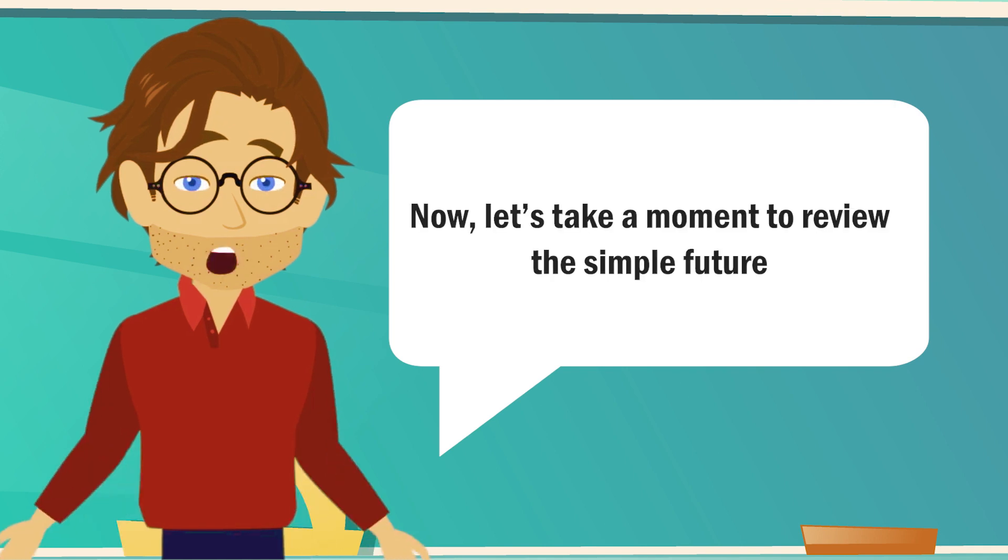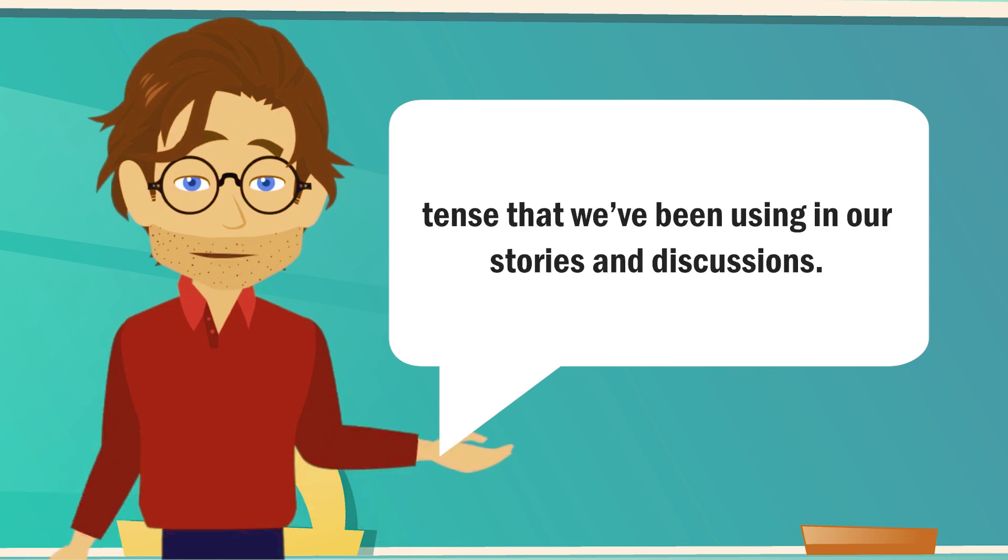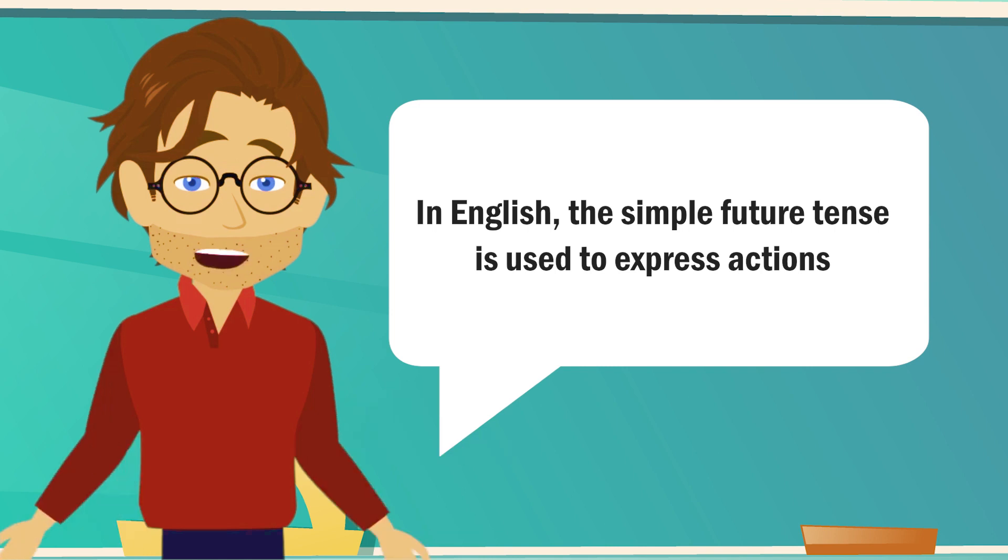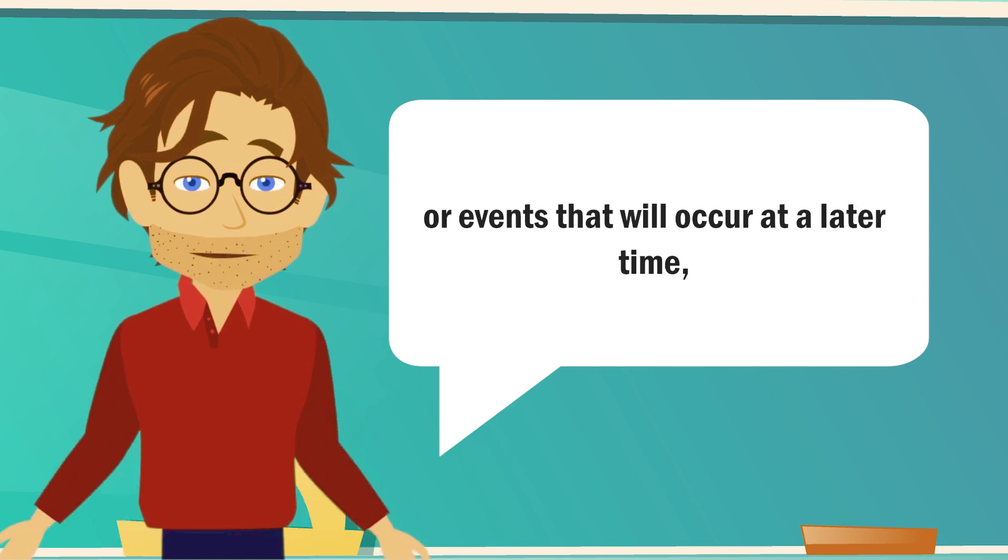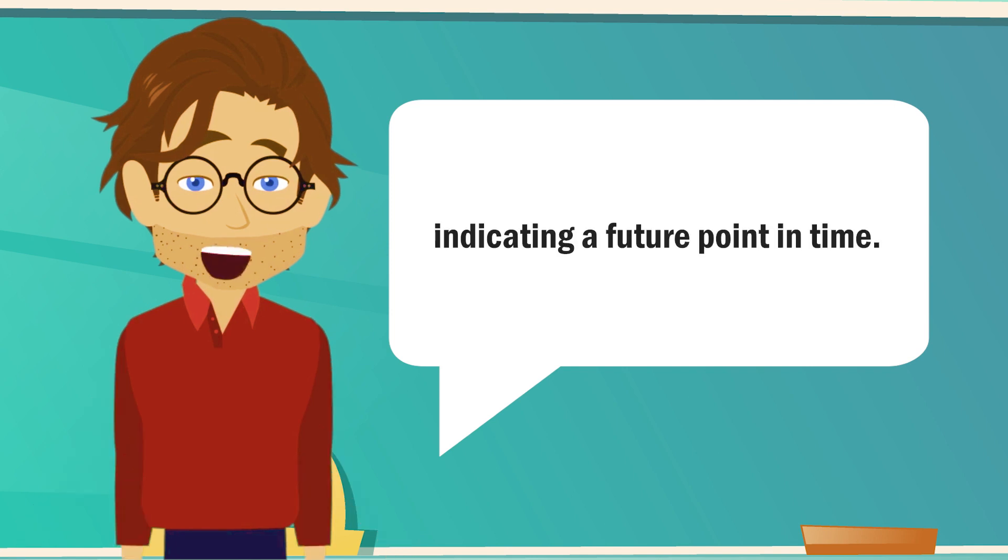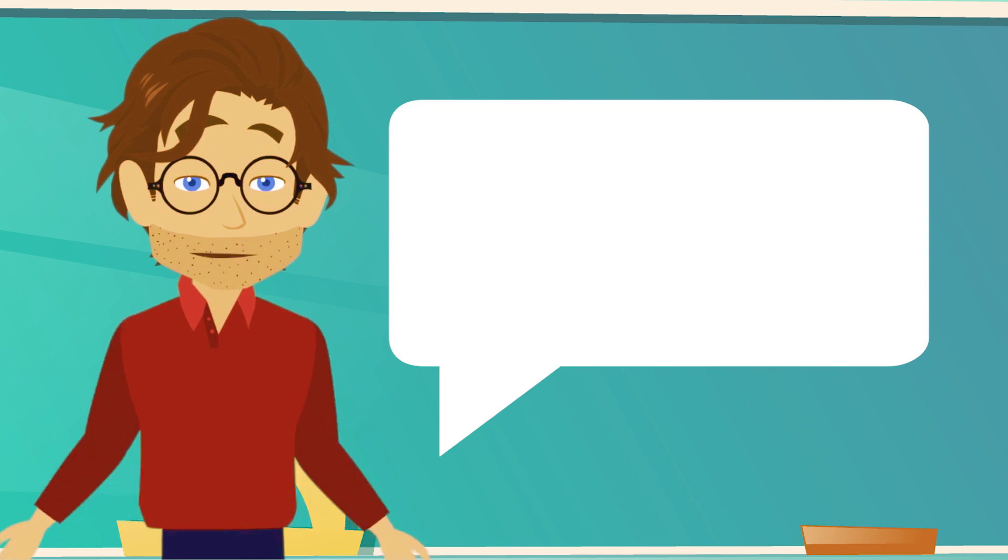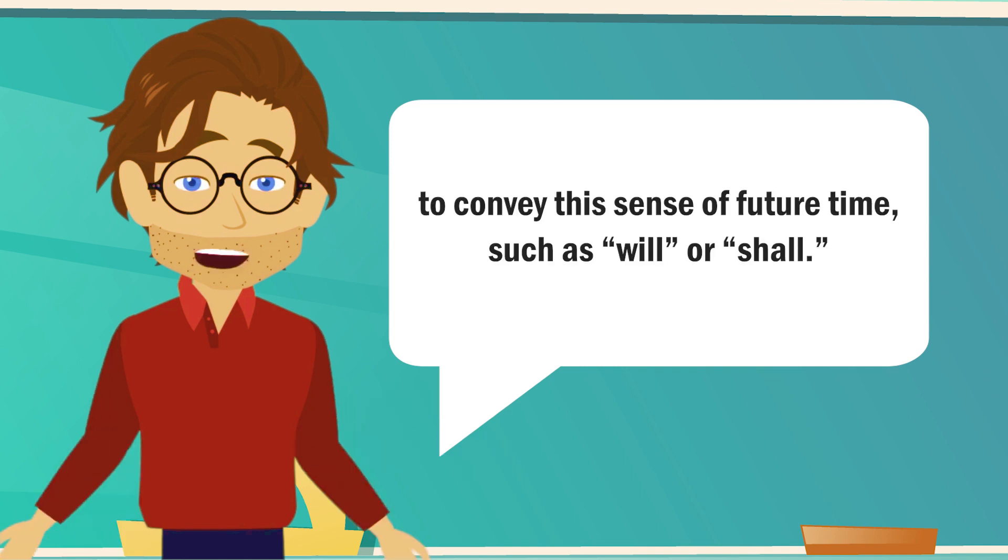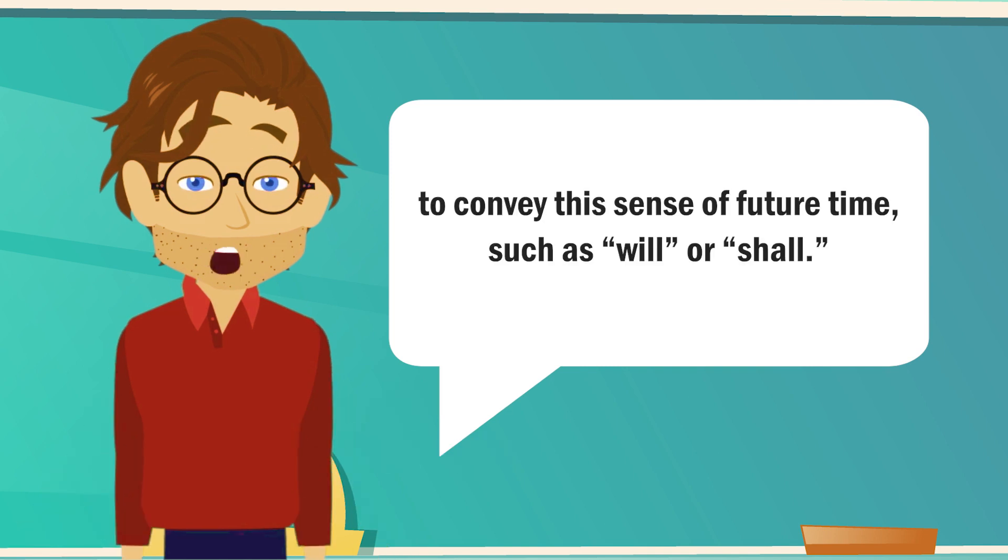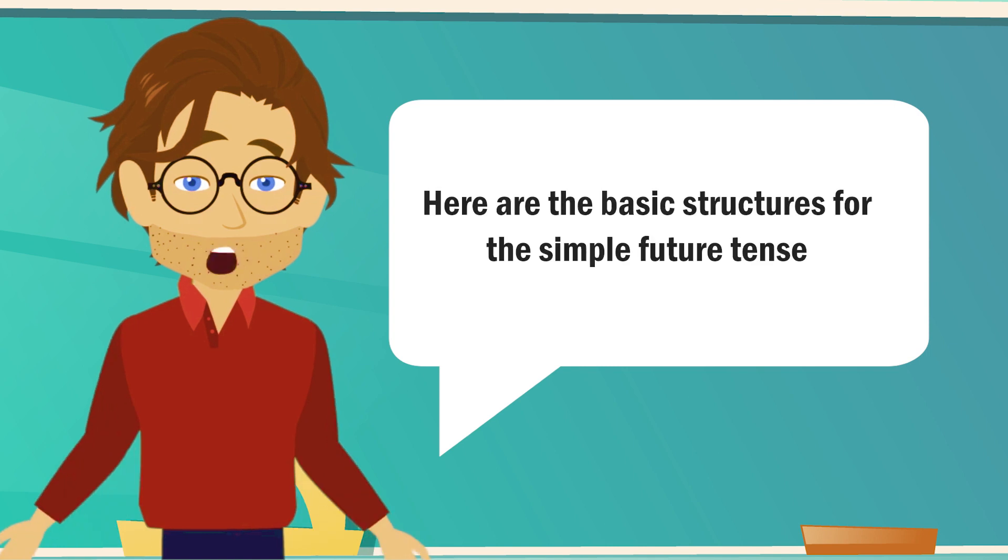Now, let's take a moment to review the simple future tense that we've been using in our stories and discussions. In English, the simple future tense is used to express actions or events that will occur at a later time, indicating a future point in time. We often use specific words or phrases to convey this sense of future time, such as will or shall. Here are the basic structures for the simple future tense.